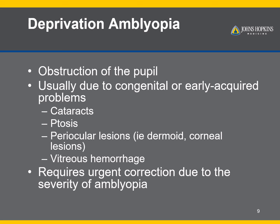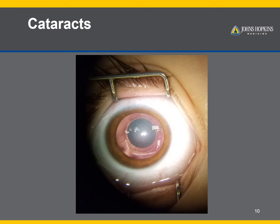Deprivation amblyopia results from vision deprivation, typically from a lesion that is obstructing the pupil or the line of sight. This is usually due to an eye condition that is congenital or develops early in life. Urgent correction of the underlying cause of visual deprivation is required to prevent severe amblyopia and permanent visual impairment. This is an example of a congenital cataract blocking the line of sight, which will result in severe deprivation amblyopia if not promptly removed with surgery.